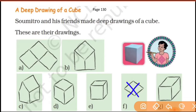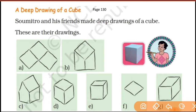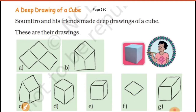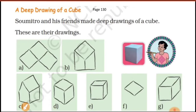In deep drawings you have length, breadth, and height — all three things. But here you can see only length and breadth; there is no height. So this is not a correct deep drawing. This one will be the correct deep drawing of a cube because you can see length, breadth, and height.